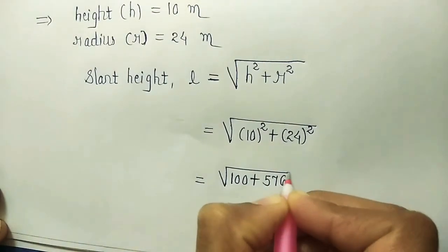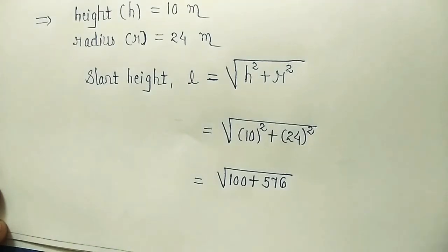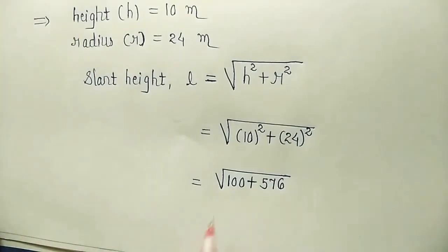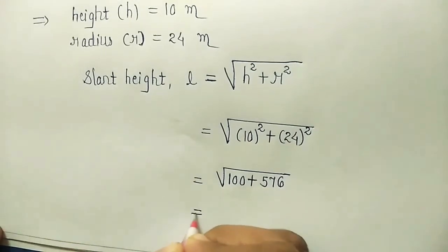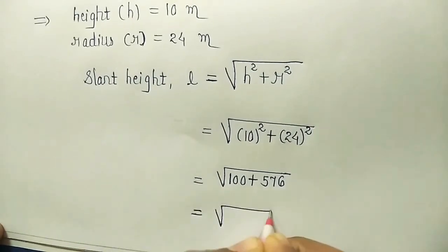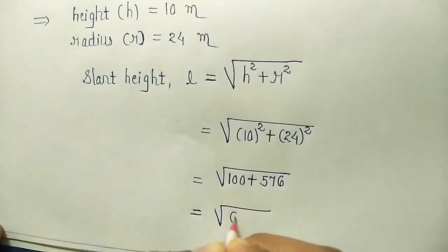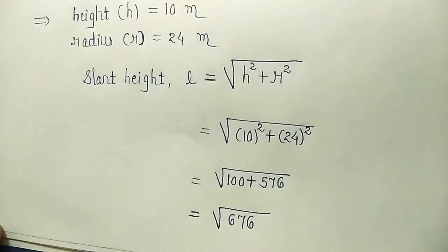What is 24 square? 576. I am sure you have learned the squares in your 8th standard. So 100 plus 576. Addition of this is what? 676.